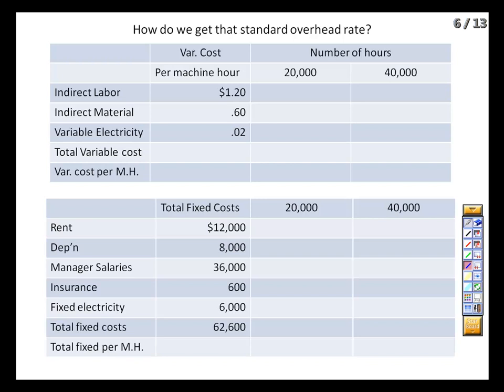Let's look at the standard overhead rate in greater detail, since virtually everyone will be using at least a normal system. How do we get that standard rate we apply to our product cost? We come back to the fixed versus variable distinction. All overhead costs are either one or the other. For variable costs, we know that for every hour of machine time we'll spend $1.20 on indirect labor costs — janitorial time, supervisor time. We know we have to keep the machines lubricated, using indirect materials, and we pay for electricity based on how much we use. These are all costs associated with production but not directly attributable to any specific item, so we pool them as overhead.